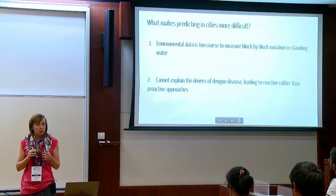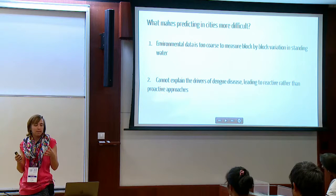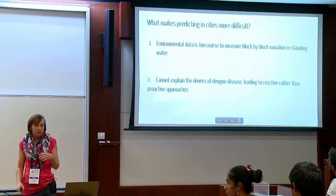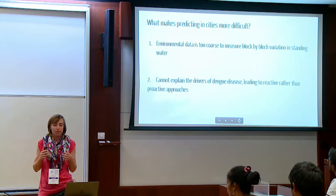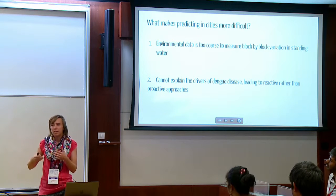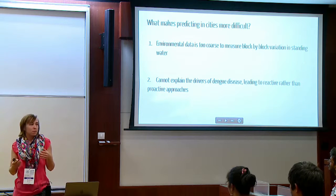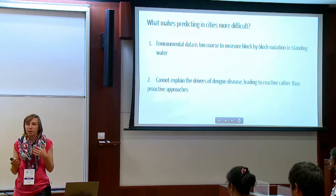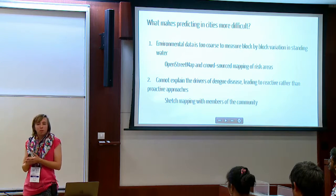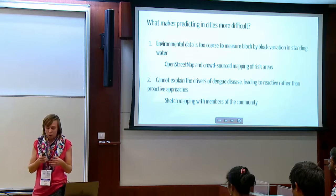This is for two reasons. First, the environmental data we tend to use is remotely-sensed satellite data, which is often too coarse for the fine-scale variation we see in cities. Second, cities have a lot of social dynamics happening, and just relying on satellite data or data input by a volunteer from far away might not capture these social aspects, making it hard to identify the true causal predictors of disease.